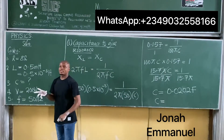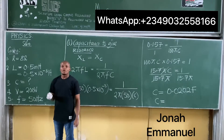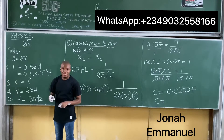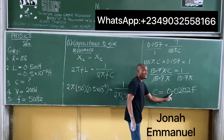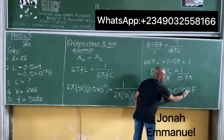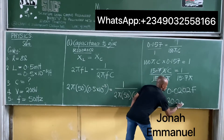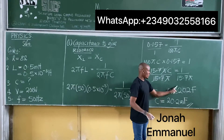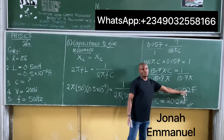In basic concepts, sometimes the value can be very small, as what you have here. So try to express that value in terms of a prefix. Count 3 decimal places: from here, 1, 2, 3 — it becomes 20.2 millifarads. So C equals 20.2 millifarads. That's a better expression.